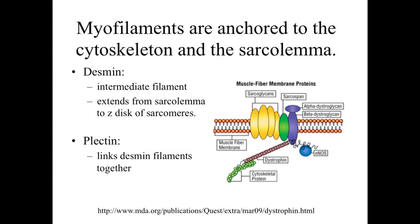As the myofilaments shorten, they drag on whatever they're attached to. The myofilaments are anchored to the cytoskeleton, and through the cytoskeleton, anchored to the sarcolemma — the muscle cell membrane. The cytoskeletal proteins include desmin as an intermediate filament, extending from the Z disk of the sarcomere, connected to other cytoskeletal elements like plectin, and ultimately linked through dystrophin to the plasma membrane. This anchors the sarcomeres and myofilaments to the membrane so that when they contract, they pull on that membrane, causing the entire muscle to shorten.